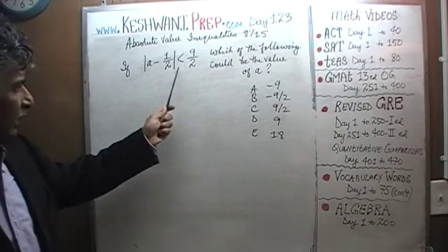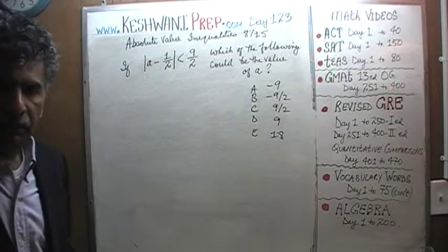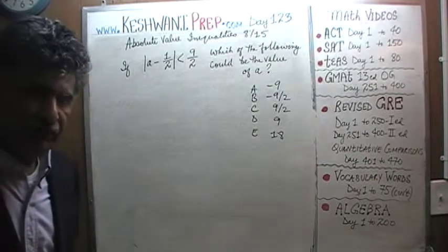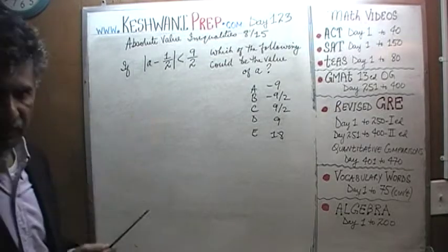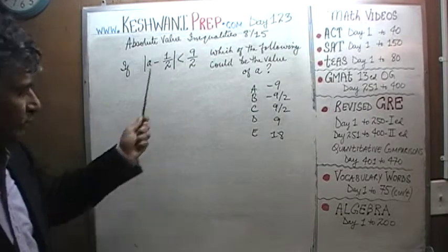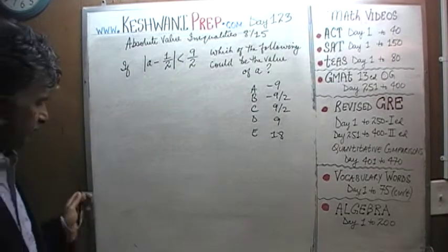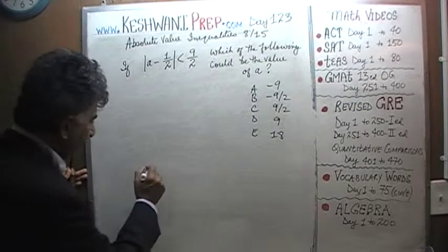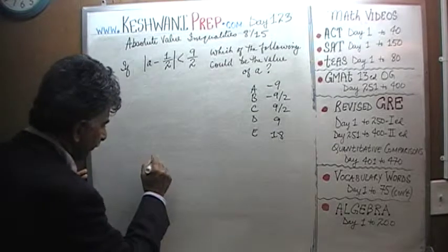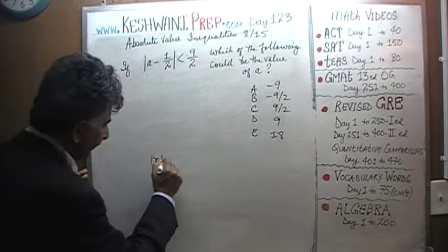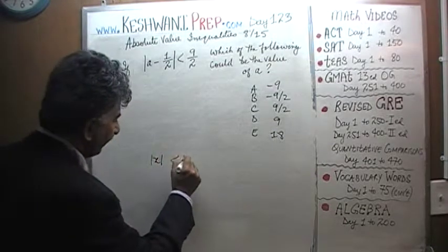Instead of jumping right into the problem itself, let's first do a simpler version of this problem. Let's say, for example, we are told that the absolute value of X is less than five.